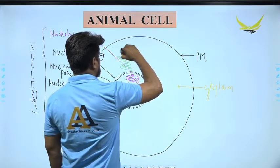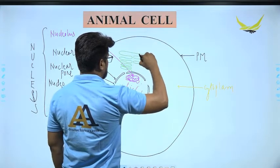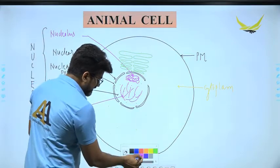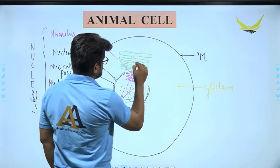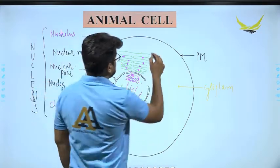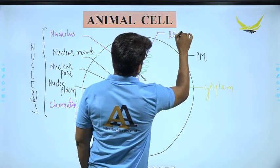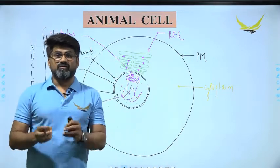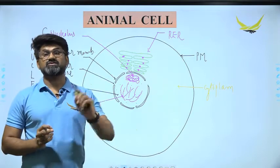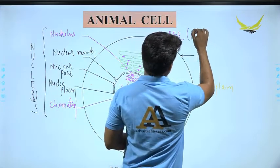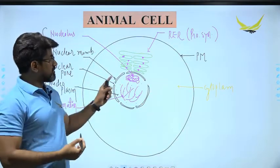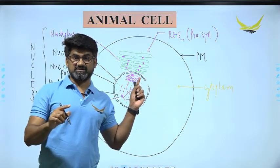The endoplasmic reticulum is formed by a flattened structure called cisternae. If granule-like ribosomes are present on the surface of the cisternae membrane, that ER is called rough endoplasmic reticulum (RER). It is called 'rough' because there are ribosomes on its surface. The RER is related with the process of protein synthesis, because the ribosomes present on it are responsible for protein synthesis.